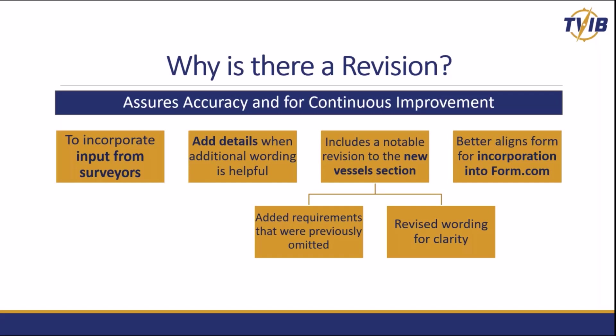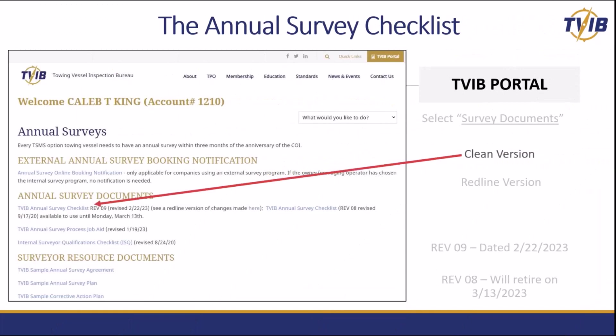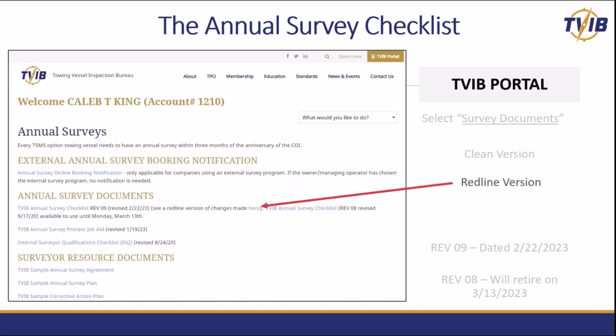Additional details have been added in to help with wording where sometimes people have had confusion or maybe not quite understanding a question set. The new vessel section has had quite a robust bit of changes. We've added some requirements that previously were omitted, and we've also revised some wording for clarity. We'll eventually get this form into form.com, and part of that is to make sure there's a citation for every question. The blue hyperlinks on the frame include the clean version of the current revision nine of the annual survey checklist.